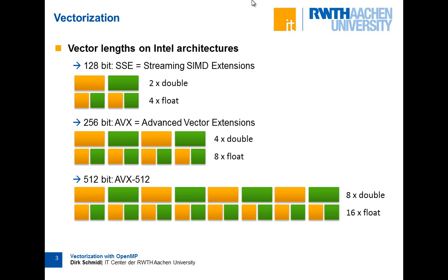On the Intel Xeon Phi, the extension is called AVX-512 by Intel — it was called differently before, but it's all the same for this MIC architecture. Here you can load eight double elements or 16 float elements in one register and do eight or 16 computations at a time. This can reduce the number of instructions executed in the best case by a factor of eight or 16.